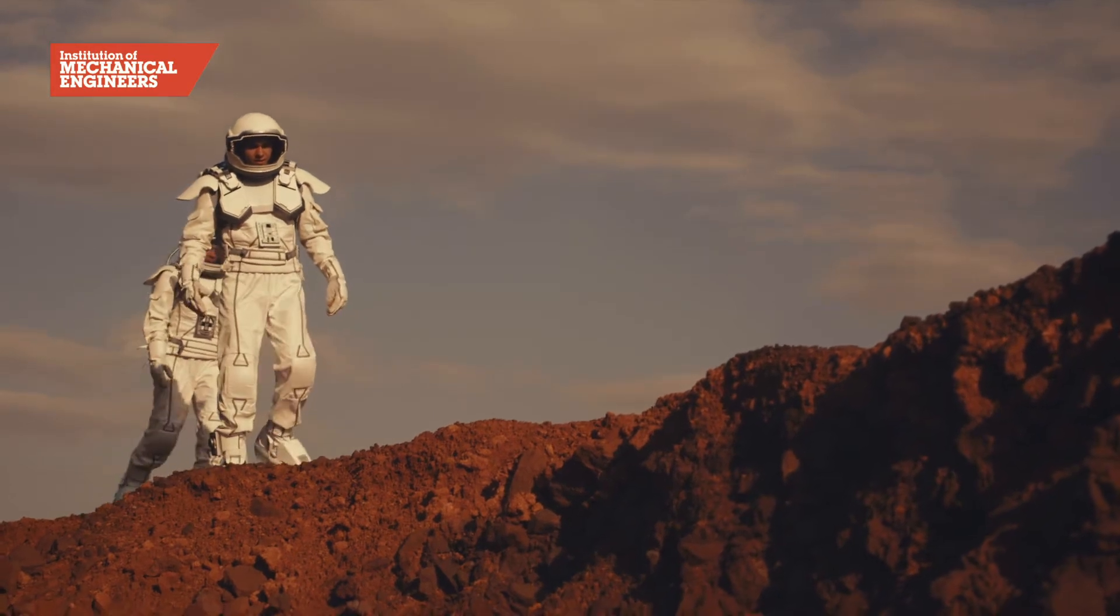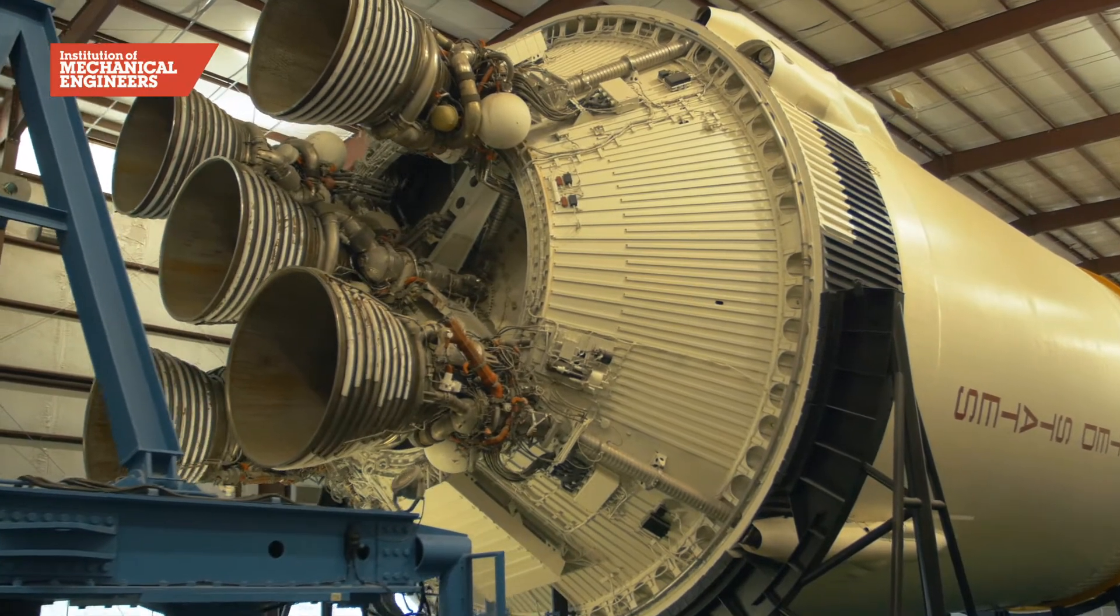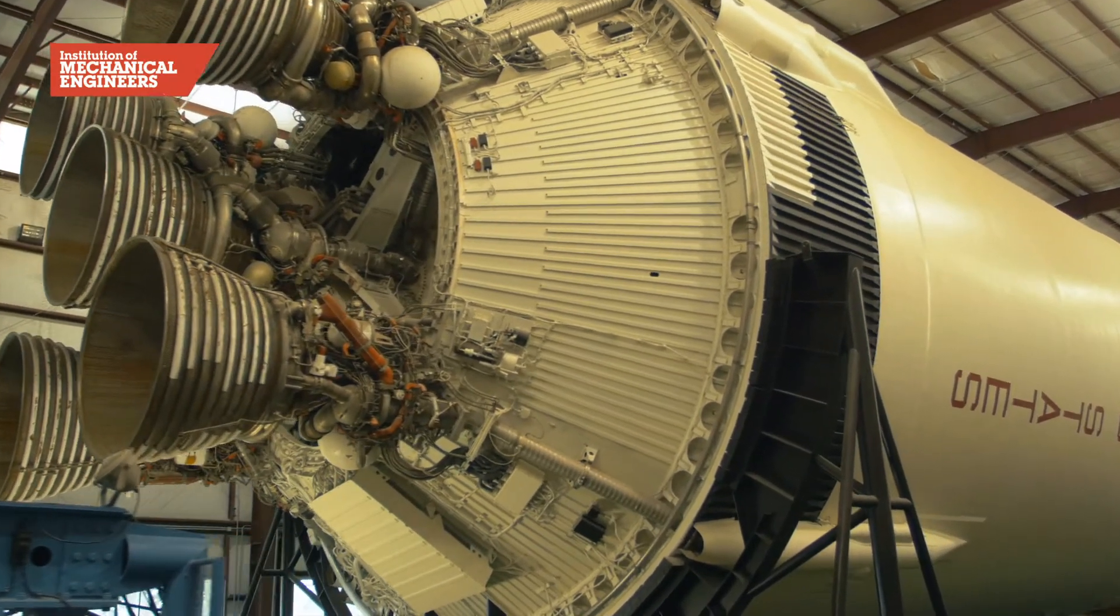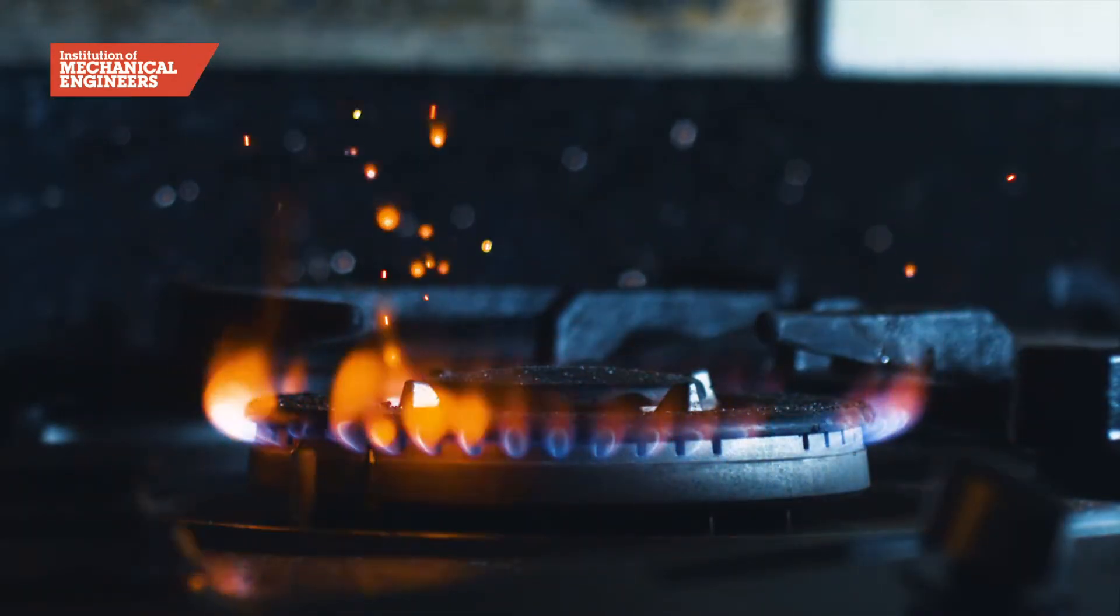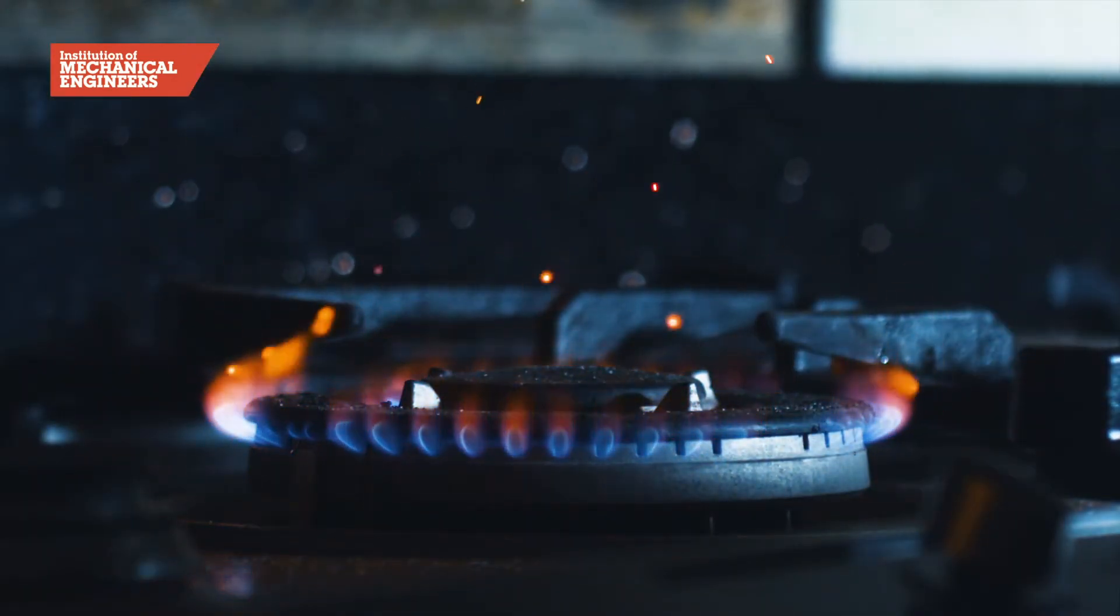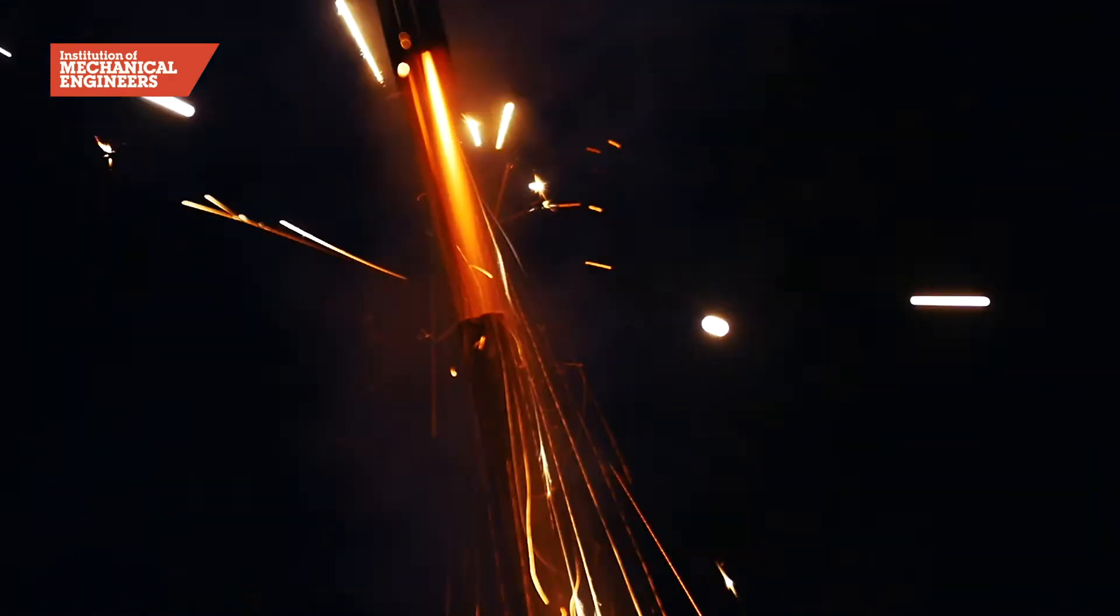In a rocket, fuel is burned in oxygen in a combustion chamber to produce a mass of hot gases. These gases expand and stream backwards out of the rocket. The force as they stream out backwards sets up a reaction force in the opposite direction called thrust, which propels the rocket forwards.